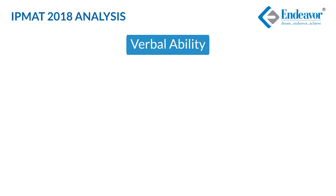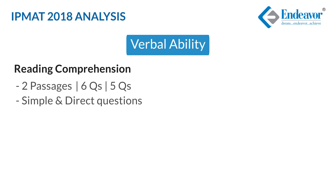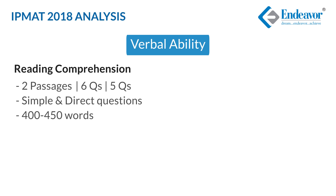Let us review the Verbal Ability section. This section can be broadly classified into four types of questions. The first being Reading Comprehension — there were two passages having six and five questions each. Both passages had very simple and direct questions, were around 400 to 450 words each, and except for one question on the title of the passage, the rest can be considered easy.